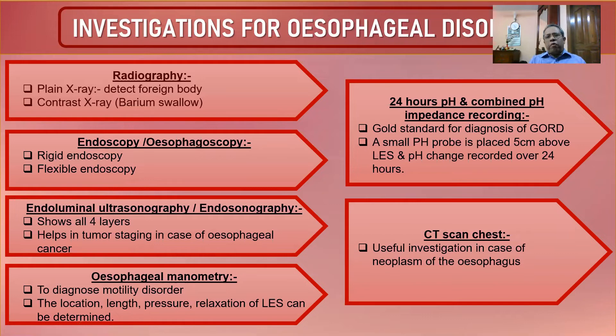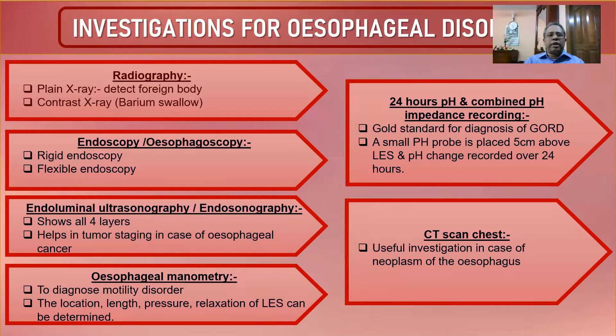Investigations for esophageal disorders include plain X-ray and contrast X-ray. Plain X-ray chest AP and lateral views are useful for foreign body localization — to determine whether it is in the respiratory tract or the esophageal tract.